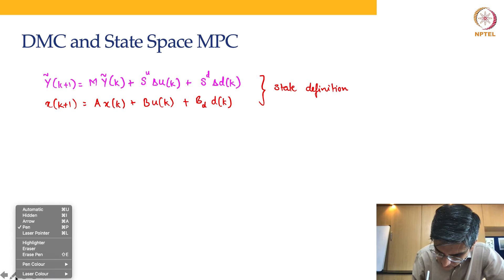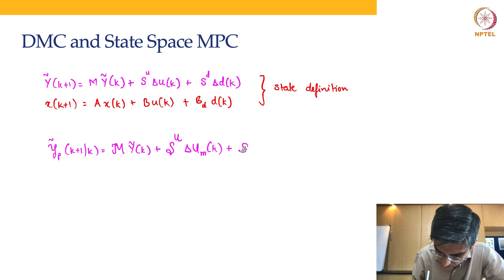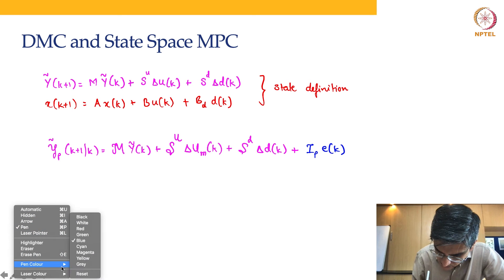When it came to DMC, we also developed multi-step prediction equation. In order to have bias correction in case of model-plant mismatch, we had one more term where e(k) was nothing but the difference between y measured and y model—y from the plant and y from the model.